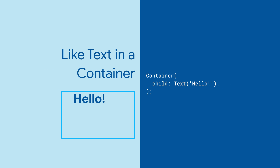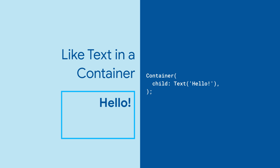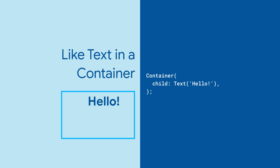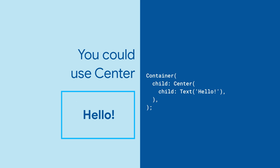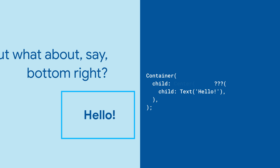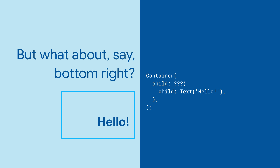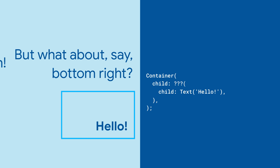For example, if you have a container widget, how do you choose where a text widget might show up inside it? The simplest case is to center it using the center widget, but what if you want to place it in the bottom right, for example?